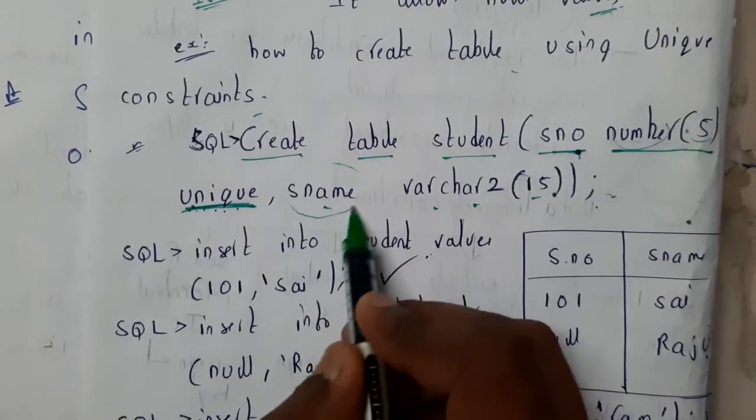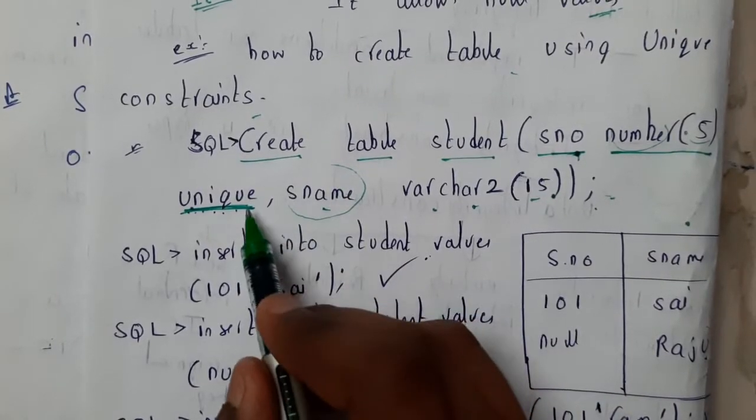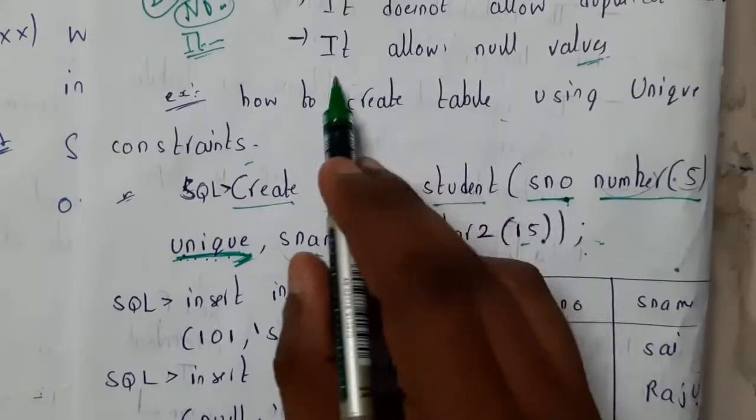But remember, unique will give a chance for null. It allows null values - please remember that. That's the key point you should remember.